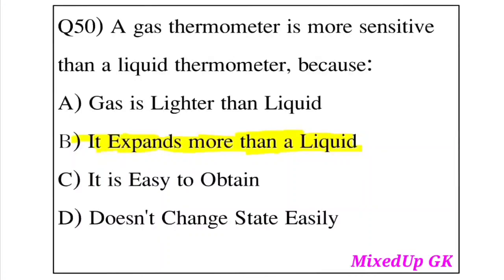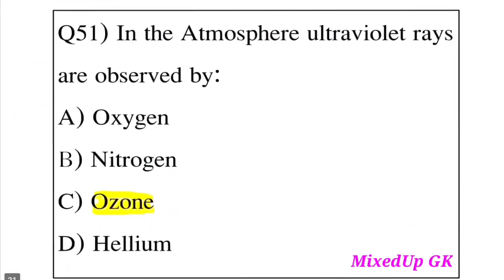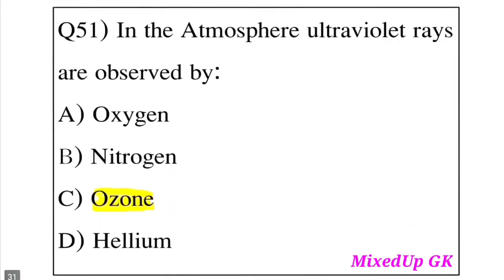Question 51: In the atmosphere, ultraviolet rays are absorbed by which substance? Option A: Oxygen. Option B: Nitrogen. Option C: Ozone. Option D: Helium. The answer is Option C, Ozone. Ozone absorbs ultraviolet rays in the atmosphere.